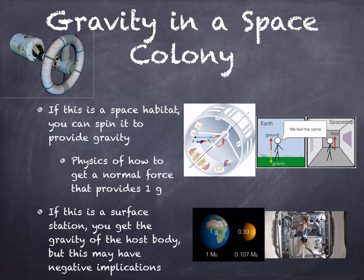Looking at the list of human needs, let's tackle gravity first. In a space habitat, this is actually not terribly difficult — at least in principle — to supply. If you are able to spin at least part of your space station, you can provide a centripetal force that will manifest as an upward normal force on your body, similar to the normal force you'd feel standing on the surface of the Earth. If you spin at just the right speed, your body will not be able to distinguish between a 1g centripetal acceleration and a 1g gravitational acceleration, so your body should behave the same way it would on Earth.